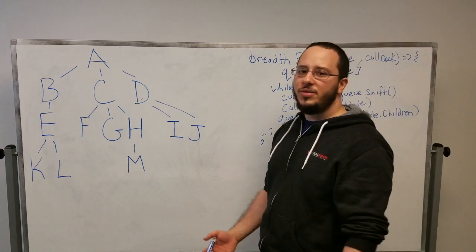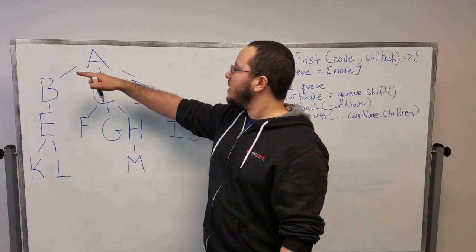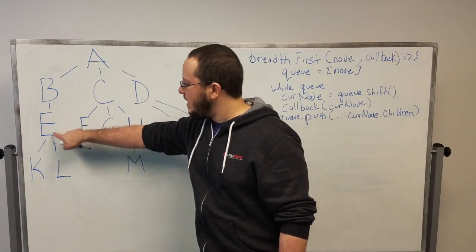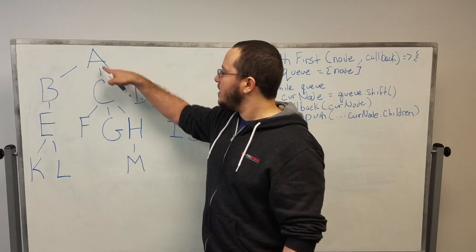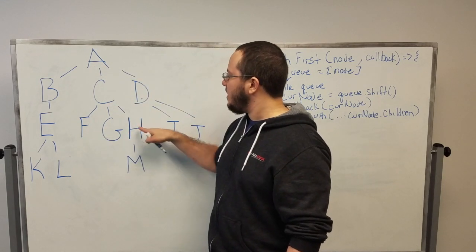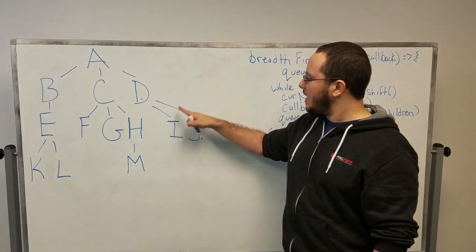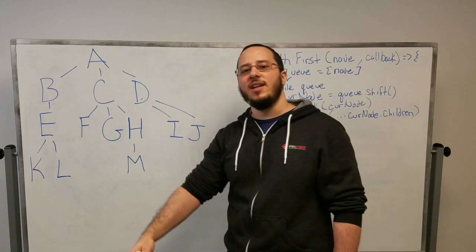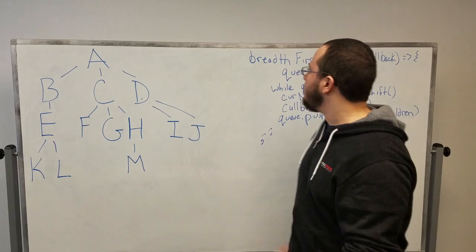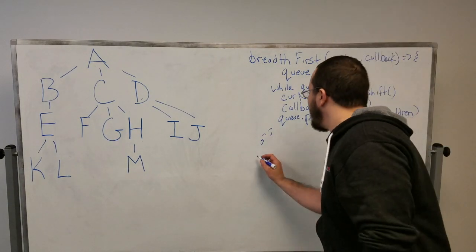Now if we wanted to do depth-first, what would that look like? We execute the callback on A, then go down to B, E, K, then L, then C, F, G, H, M, and then D, I, J. So we go down as far as we can, then go back up, then down, then back up, and then down.